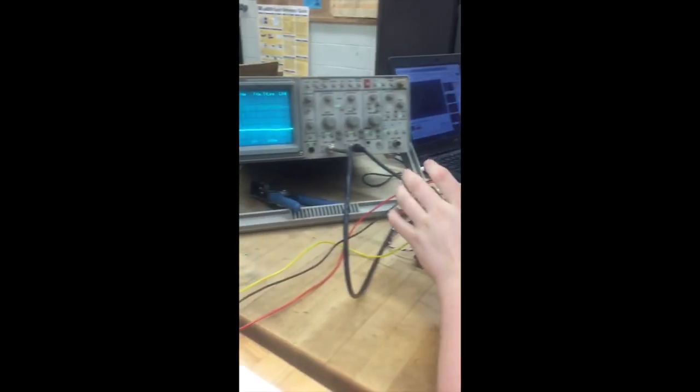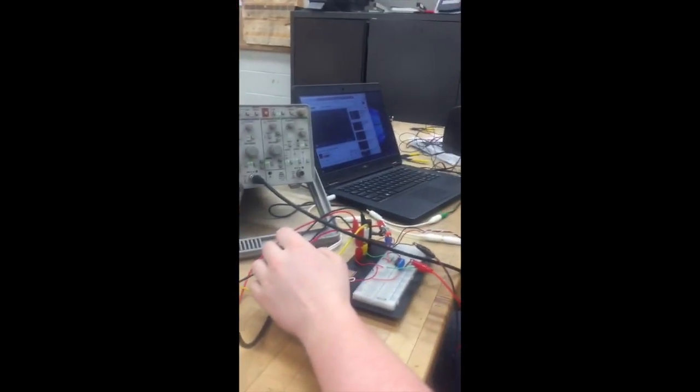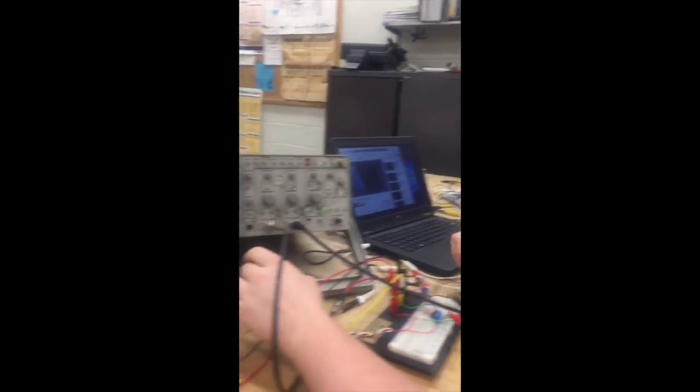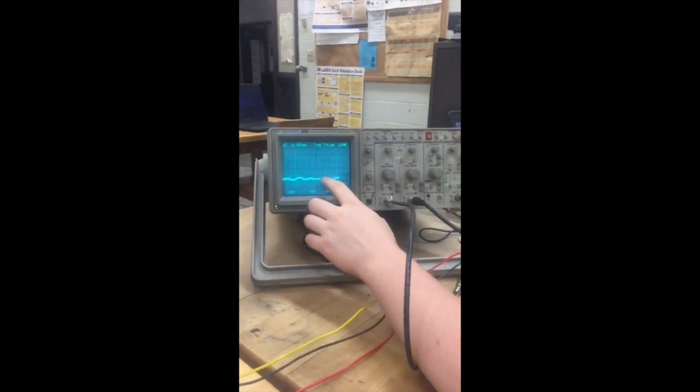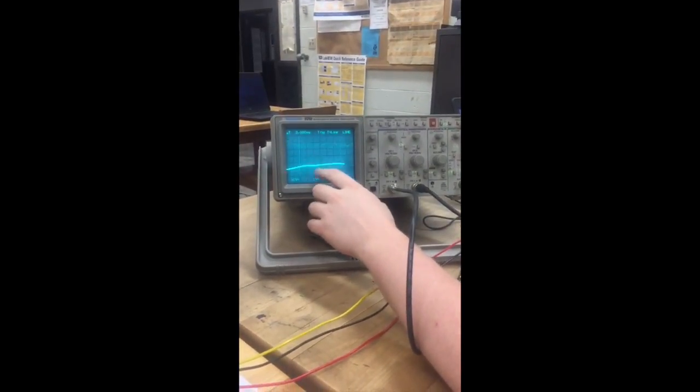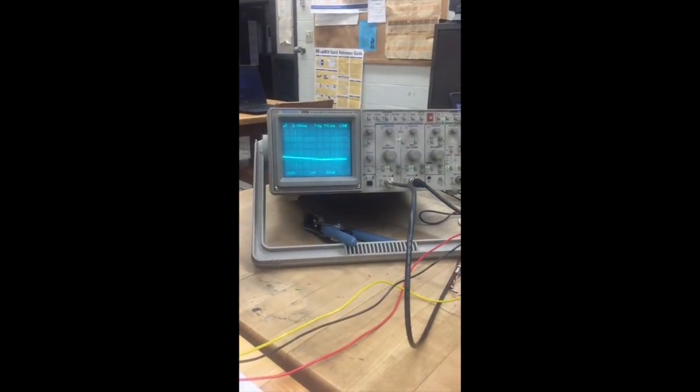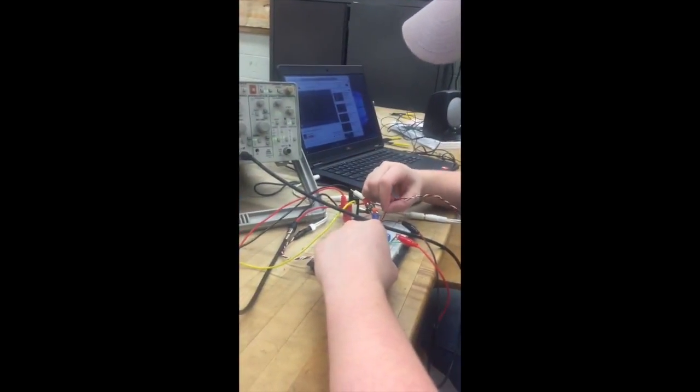So right now we have the music playing as normal and it's quite loud. But you can see on the oscilloscope the frequencies of the music. Now I'm going to change it to a low pass.